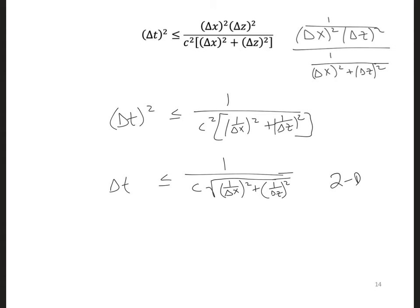So this is the two-dimensional Courant stability limit. We can't run a two-dimensional FDTD model with a dt set any higher than this or it will go unstable.